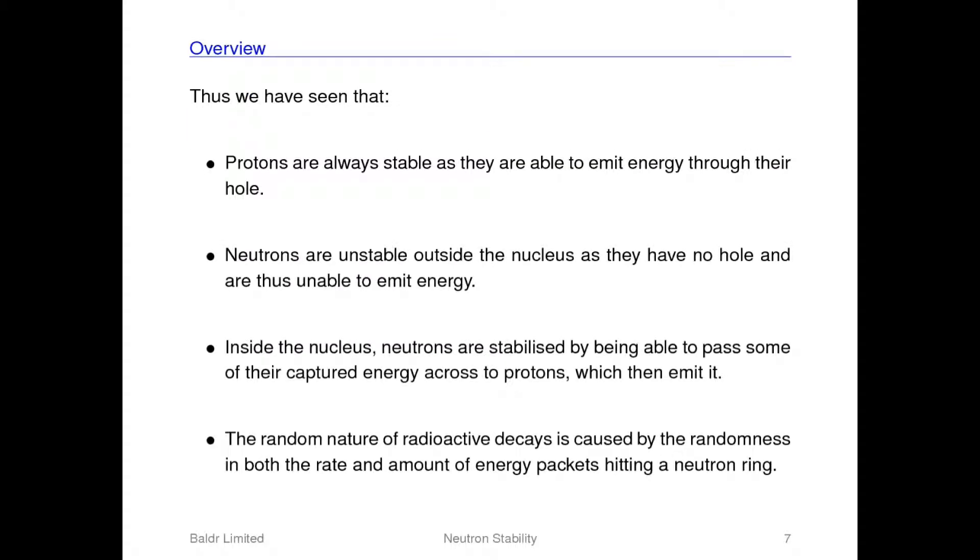Overall therefore we have seen that protons are always stable because they are able to emit a proportion of the energy that has hit them through their hole. Neutrons however don't have a hole in their rings and so cannot emit this energy, which is why when they are on their own they are radioactive.